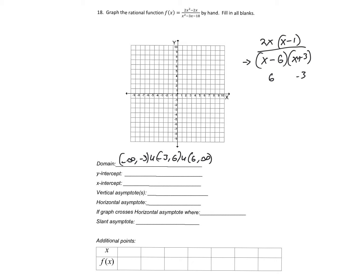For the y-intercept, we just need to plug in x equals 0. Whenever we plug in 0, we get the y-intercept at the origin, (0, 0). For x-intercepts, we set the numerator equal to zero: 0 equals 2x squared minus 2x. Factoring out 2x gives x minus 1, so we actually get two x-intercepts — one at x equals 0 and one at x equals 1, giving us points (0, 0) and (1, 0).